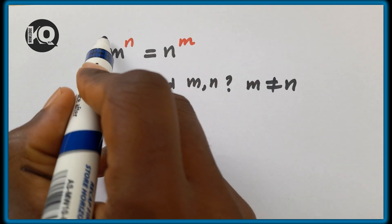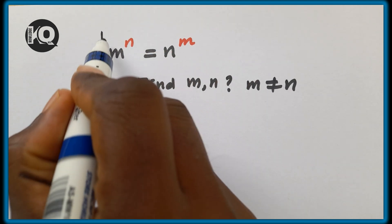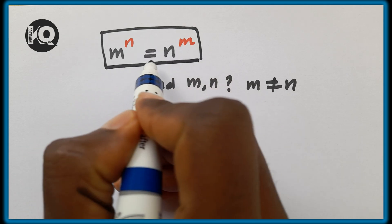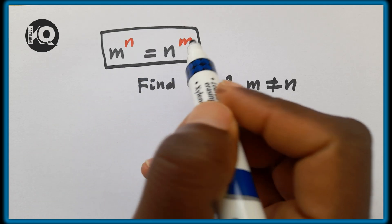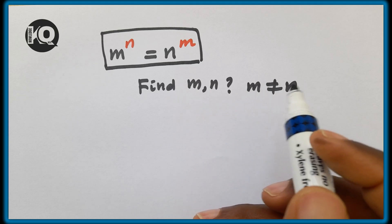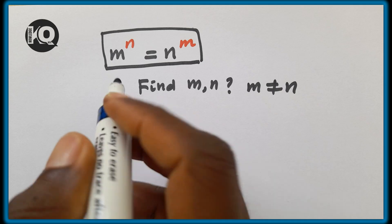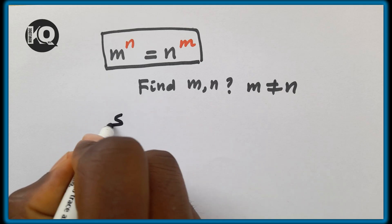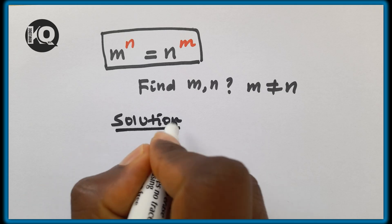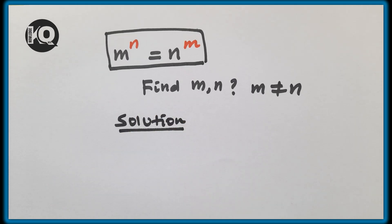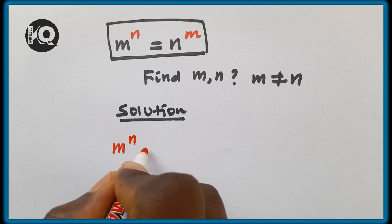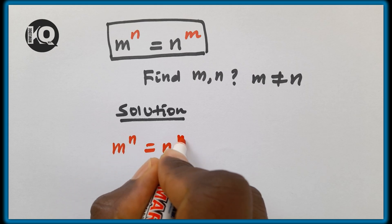Hello, welcome. Solve this equation: m to the power of n equals n to the power of m. Find the value of m and n, where m must be different from n.